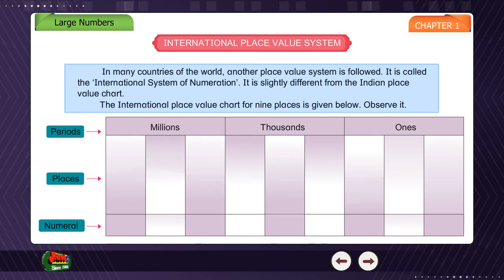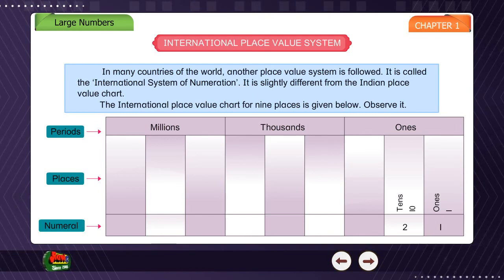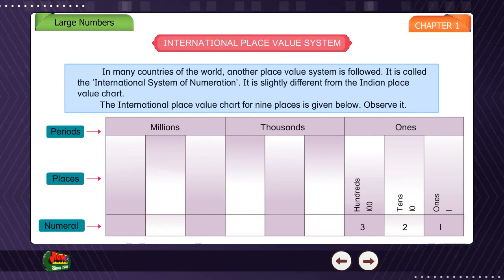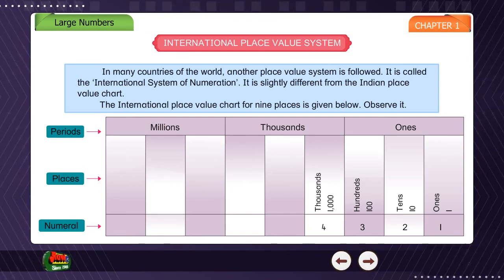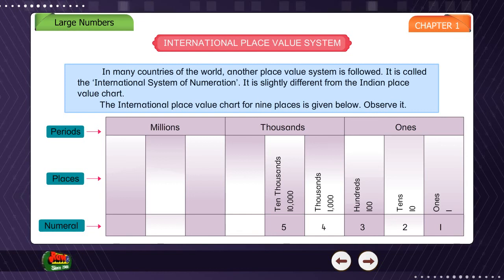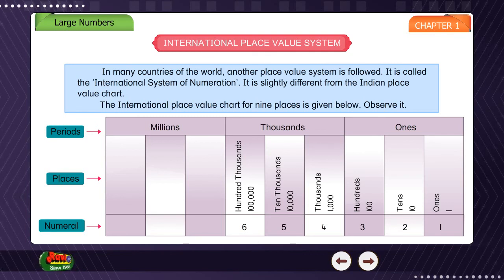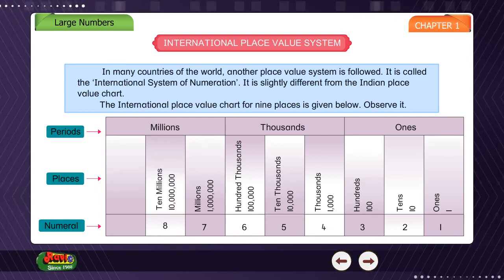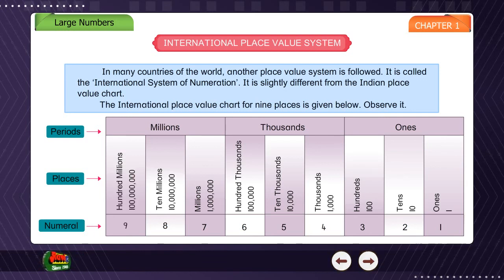The nine places in the international system are: 1. Ones, 2. Tens, 3. Hundreds, 4. Thousands, 5. Ten thousands, 6. Hundred thousands, 7. Millions, 8. Ten millions, 9. Hundred millions.